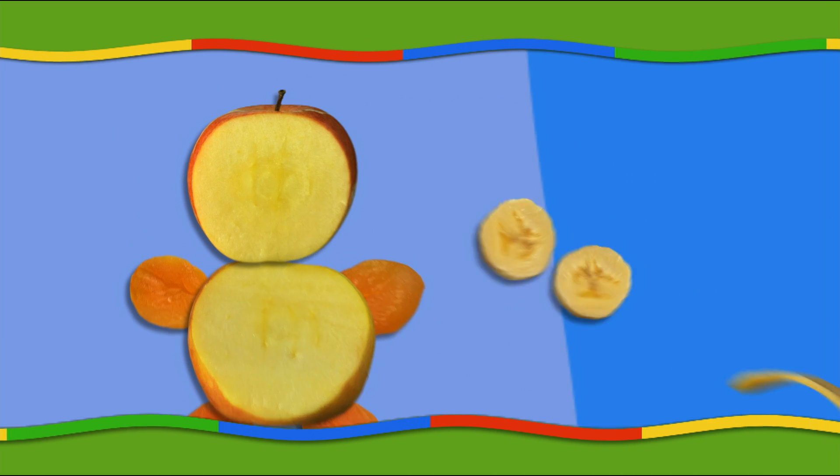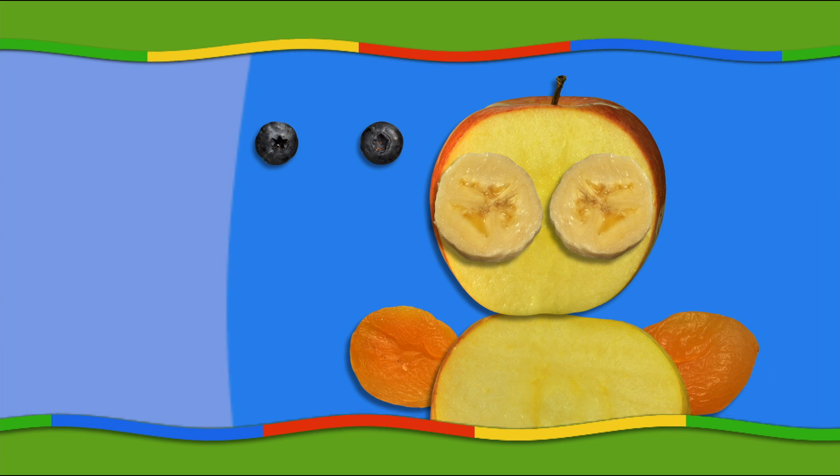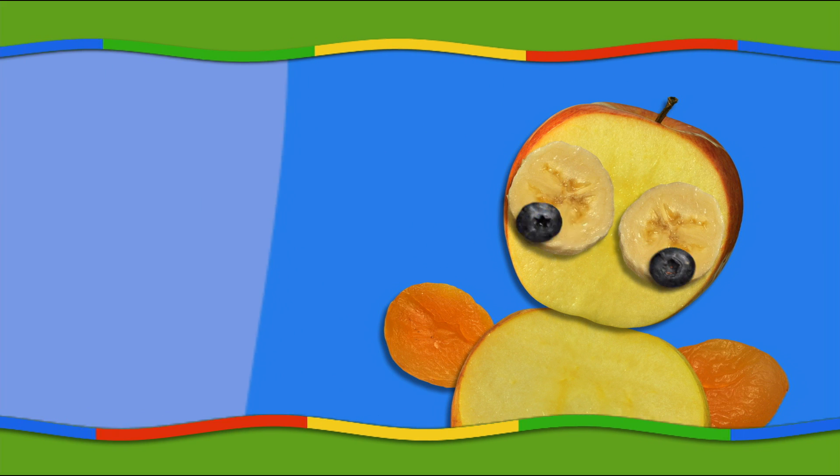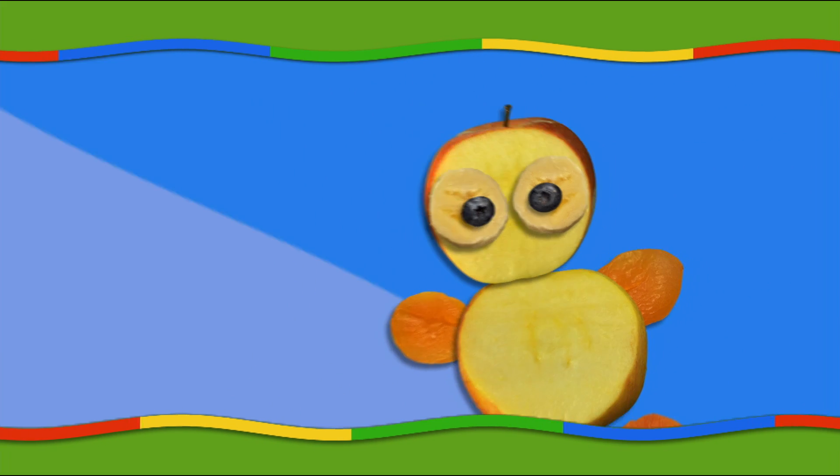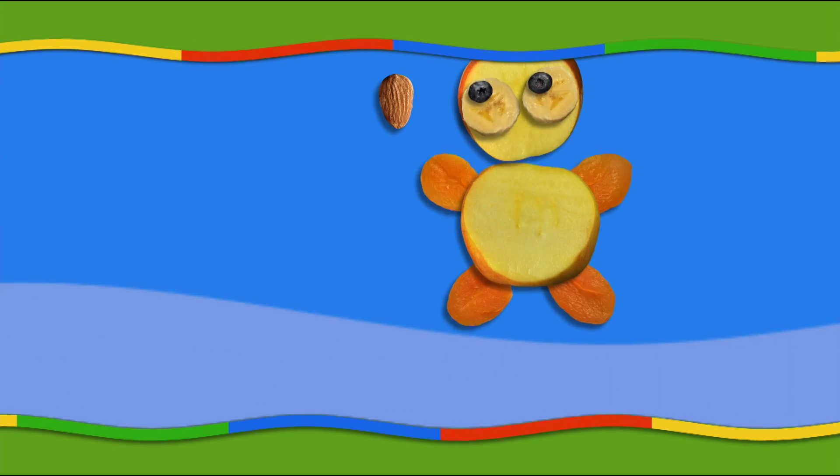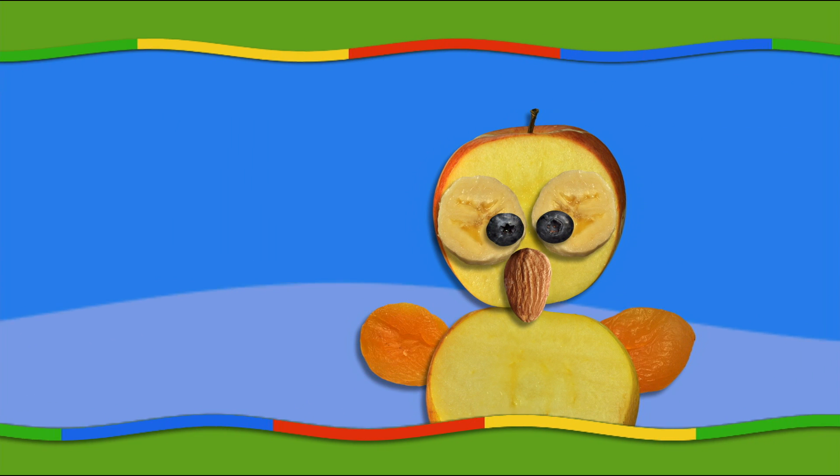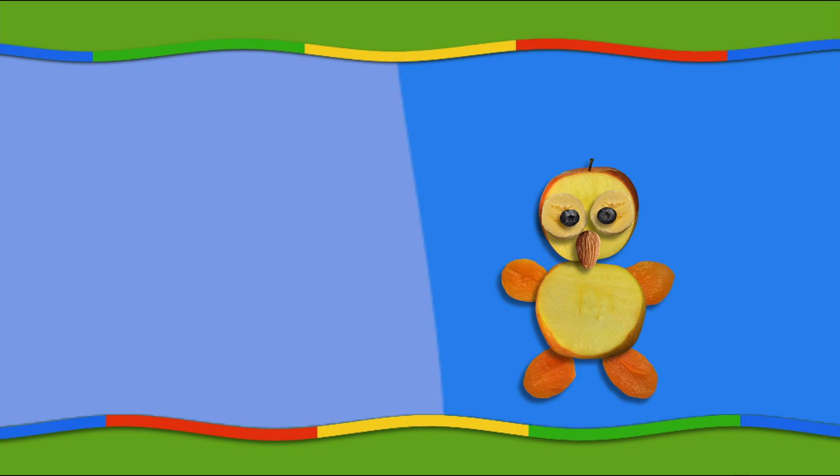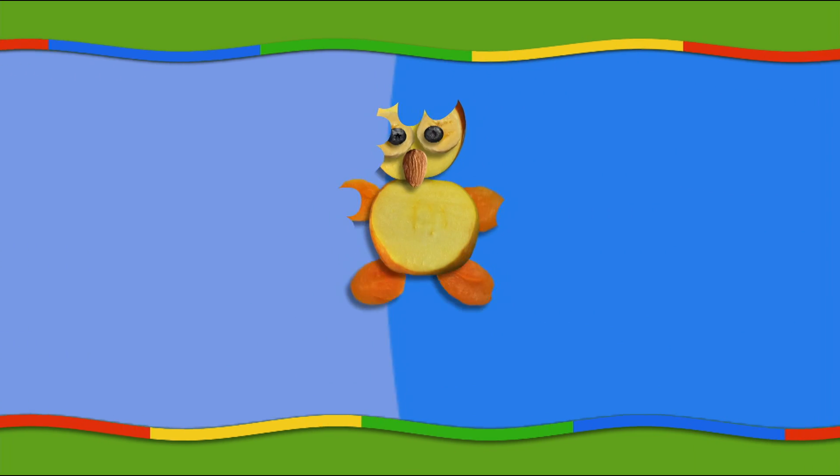Two little pieces of banana can be used for its eyes with blueberries for the pupils. Use an almond for its beak, and there you go—a baby penguin! Yum yum yummy! It's your turn now. Come back soon for another recipe, yum yum yummy!